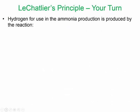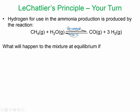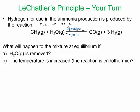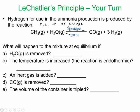Here's an example for you to try. Hydrogen is used for ammonia production and is produced in this reaction. Note that conditions written above the arrow indicate a catalyst and high temperature are required. Try to determine which way the reaction shifts for: (A) H2O is removed, (B) temperature is increased — it's endothermic, (C) an inert gas is added, (D) CO is removed, and (E) the volume of the container is tripled.